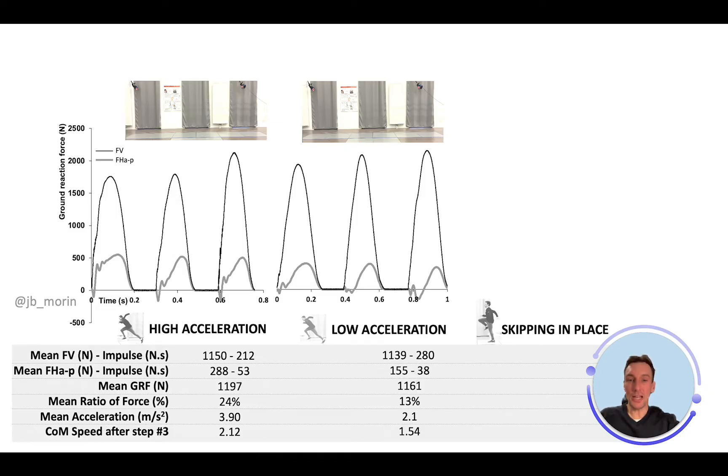My vertical average force and vertical average impulse is close or even higher. I orient my push more forward and have the same average vertical force or even higher vertical impulse. But this is not what matters. What matters is that my horizontal force is much lower, and this explains my lower acceleration performance.